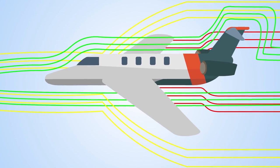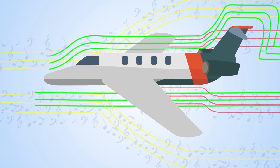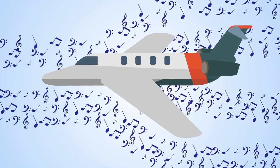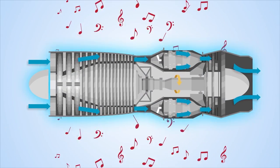The two primary sources of aircraft noise are aerodynamic, when air passes over the frame, and engine.